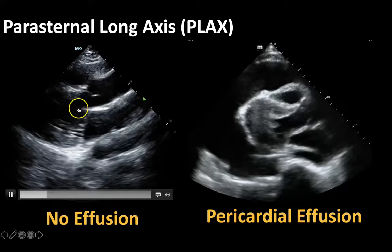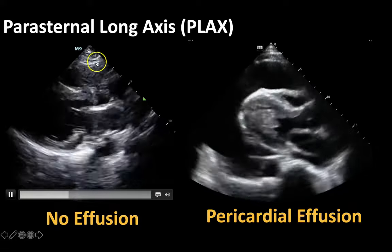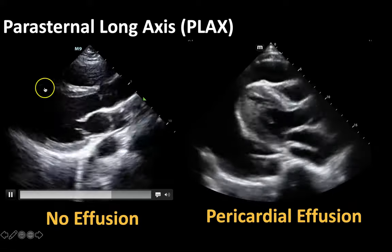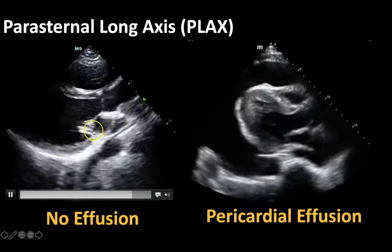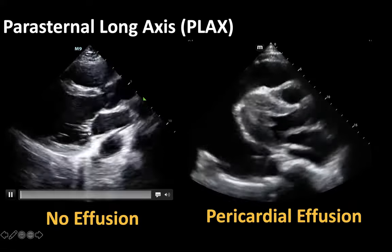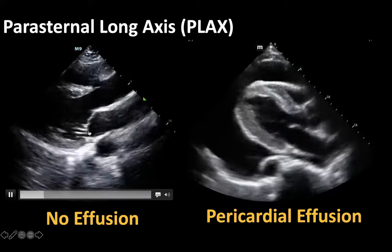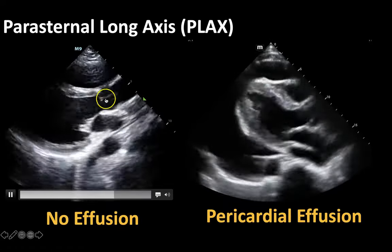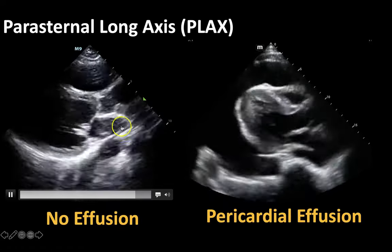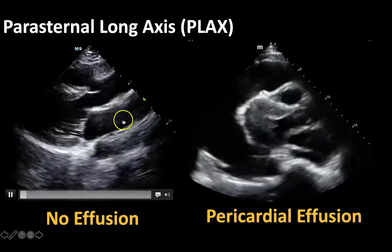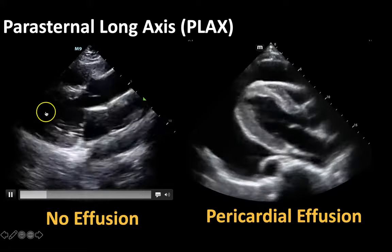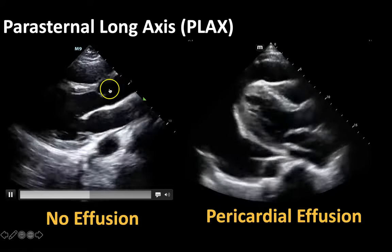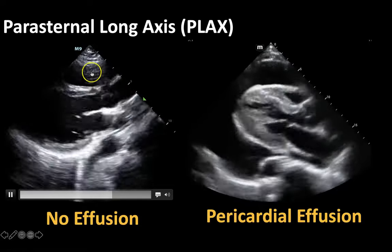This is your parasternal long axis view, the same normal view we just had. Here's your left atrium, your left ventricle, your aortic outflow tract, and your right ventricle. When we're looking for an effusion, we want to look outside the heart in that pericardium for that black fluid.